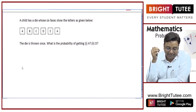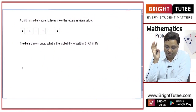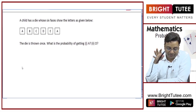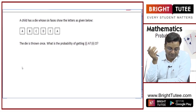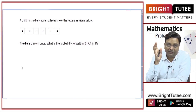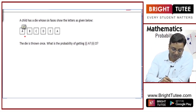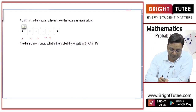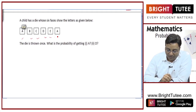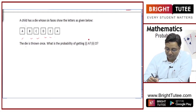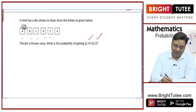In this question, a child has a die whose six faces are shown as these letters. This is a certain kind of die — this is not a standard die; it has got six faces shown like this. Now, this die is thrown once. What is the probability of getting an A or D?